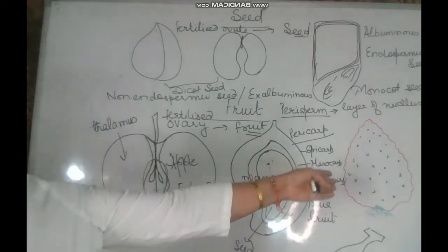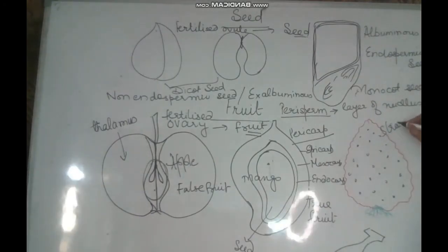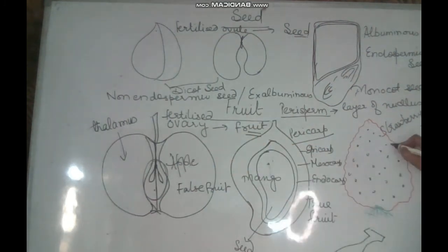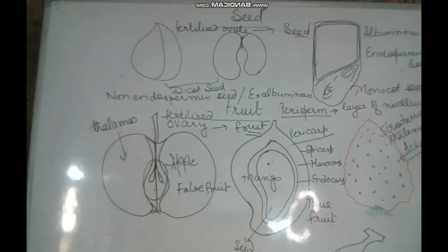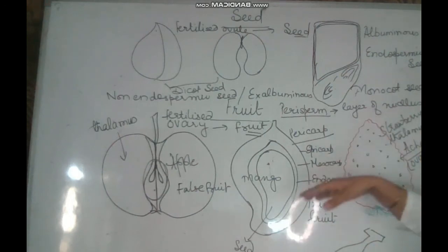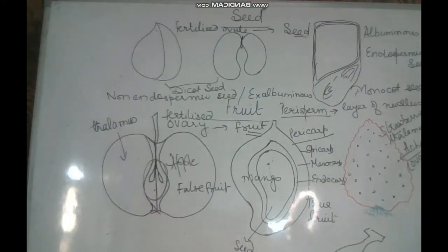Similarly, strawberry. In strawberry also, the edible part is the thalamus — we eat the thalamus. The dot-like structures that you observe all over the strawberry are known as achini. What is achini? Achini represents the ovary here. It is generally said that strawberry has seeds on the surface of the fruit — but no, achini are not the seeds, these are the ovaries. The fleshy edible part is the thalamus.